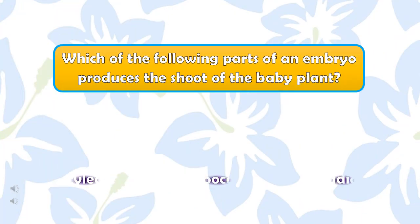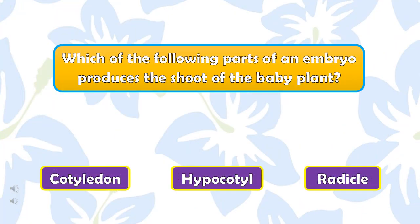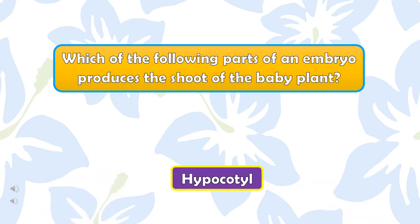Which of the following parts of an embryo produces the shoot of the baby plant? The right answer is hypocotyl.